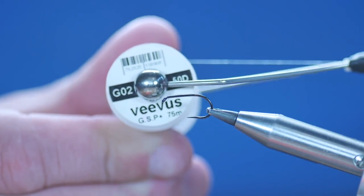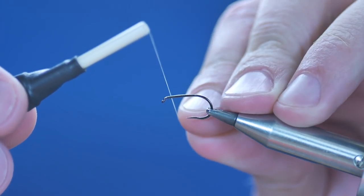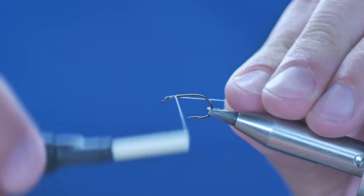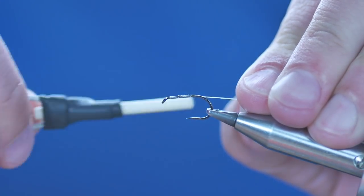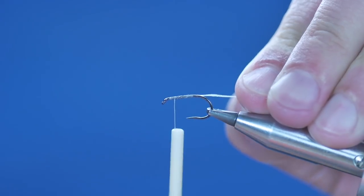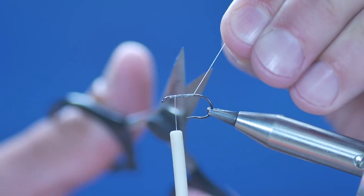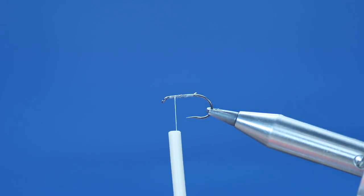So the tiniest bit of super glue, and the thread I'm going to use today is the Vivas GSP in white. I'm going to catch that and just go over that super glue and get a good bed of thread. I can take away my waste.